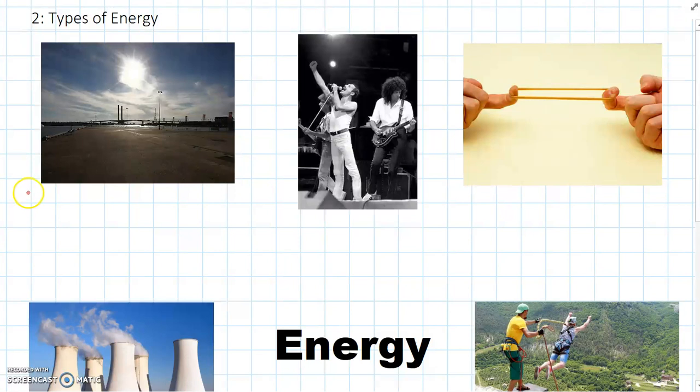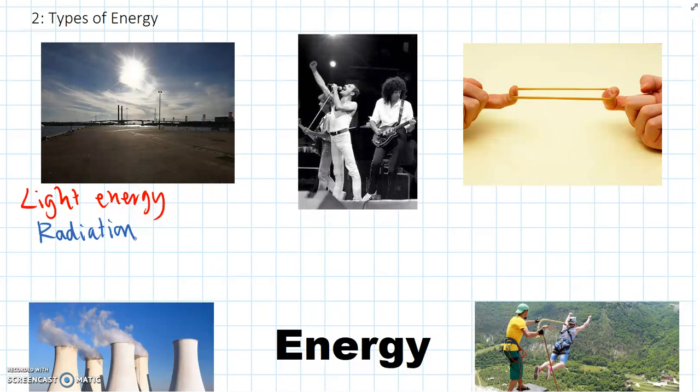Let's start with the first one here, which is light energy. Light is called radiation, which is a type of wave that just moves through the air. We can see light because that radiation moves into our eyes, and we can sense that. So, light is radiation that moves through the air.